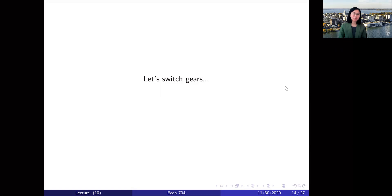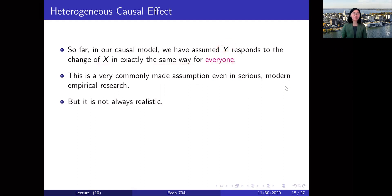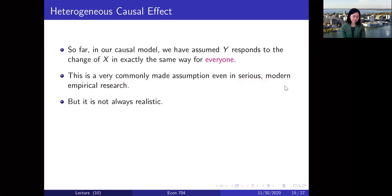Now let's talk about the second special topic of today: the heterogeneous causal effect. So far, for the past few weeks in our causal model, we have assumed that y responds to the change of x in the same way for everyone. We have been assuming that the causal effect is homogeneous for everyone in the sample or in the population. The homogeneous effect assumption is actually very commonly made even in serious contemporary research. However, if you think about it even for a few seconds, you realize it's not a very realistic assumption. People are different — they respond to treatment in different ways.